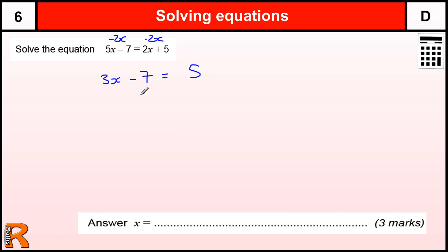From there, you can just guess the answer probably, but the standard method is to add 7 to both sides, to get 3x equals 12, and then divide by the 3 to get x equals 4.